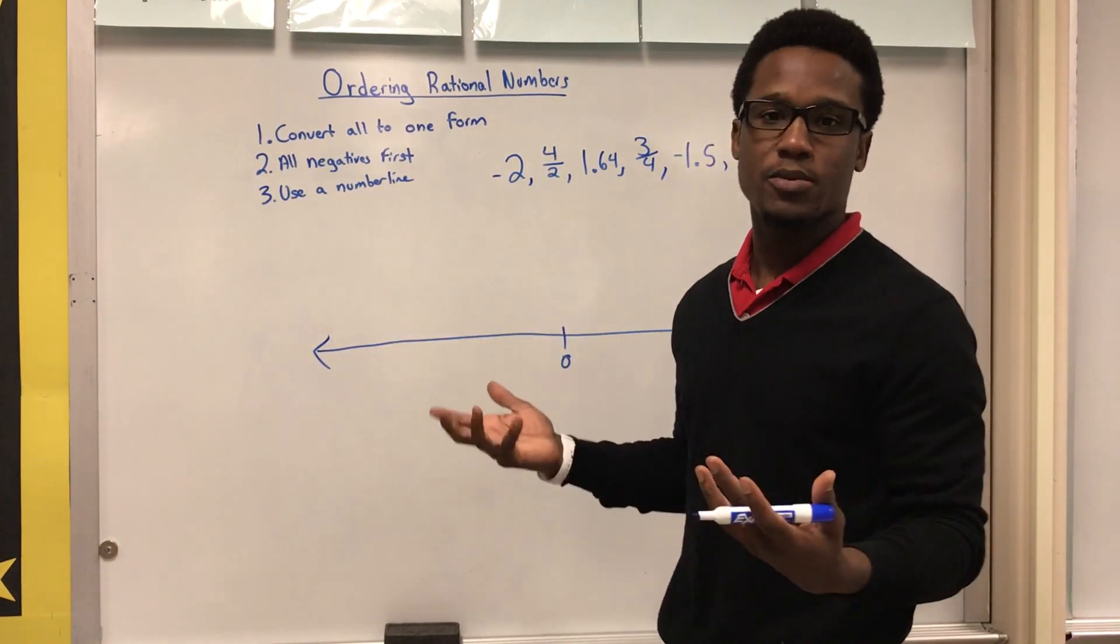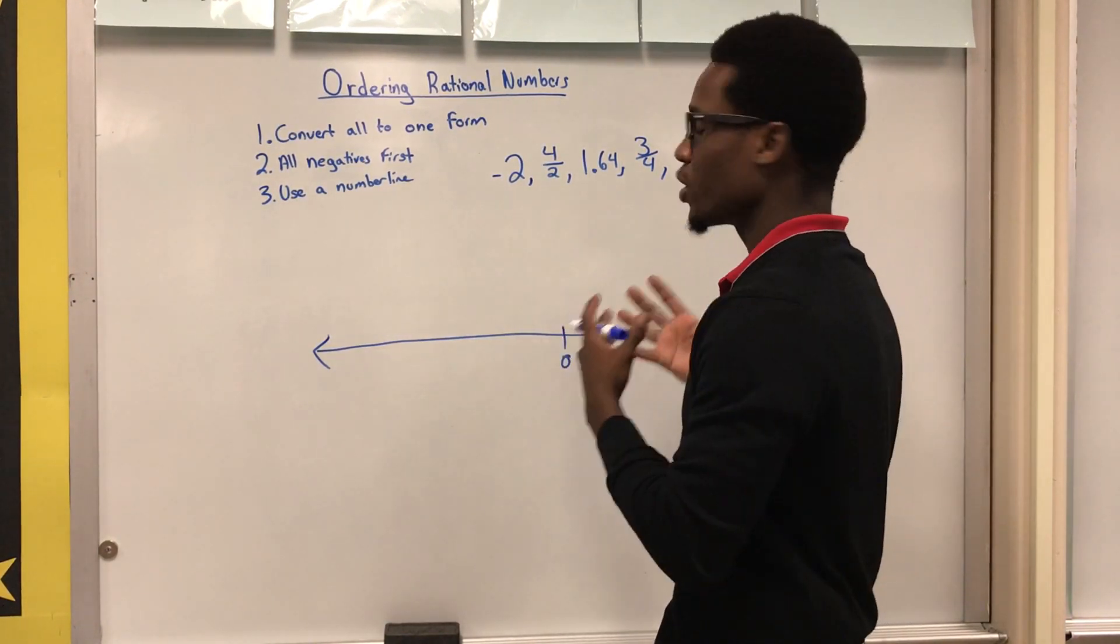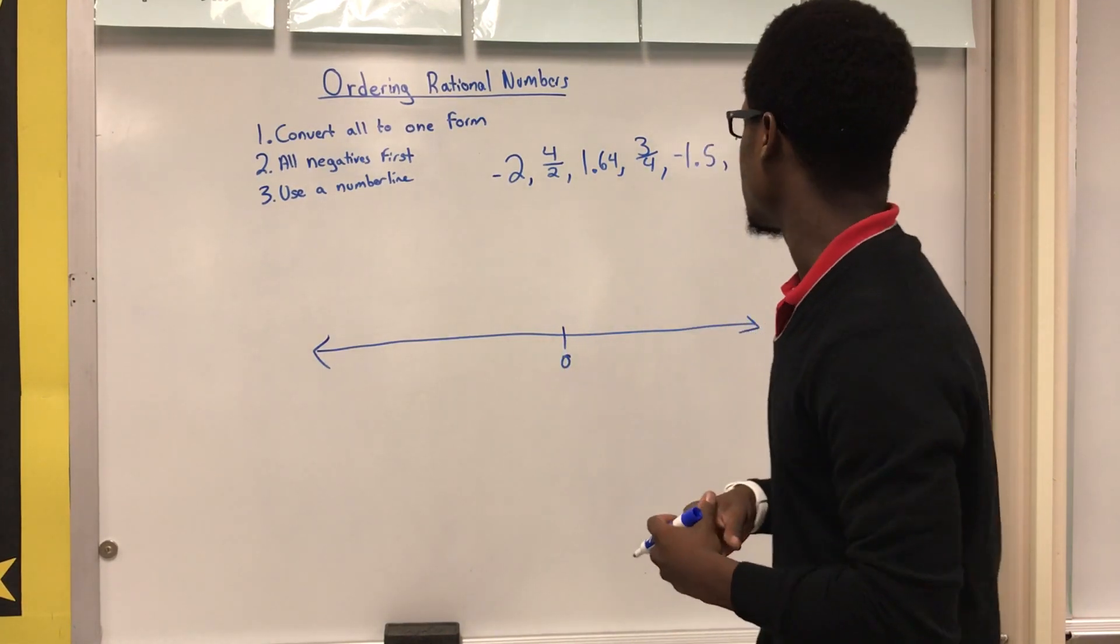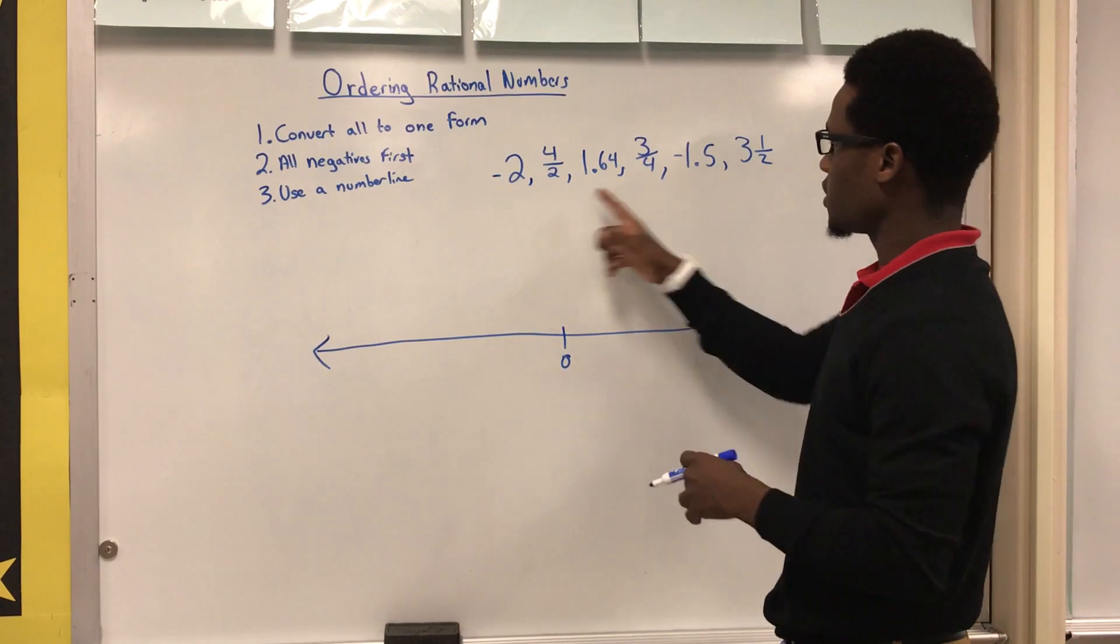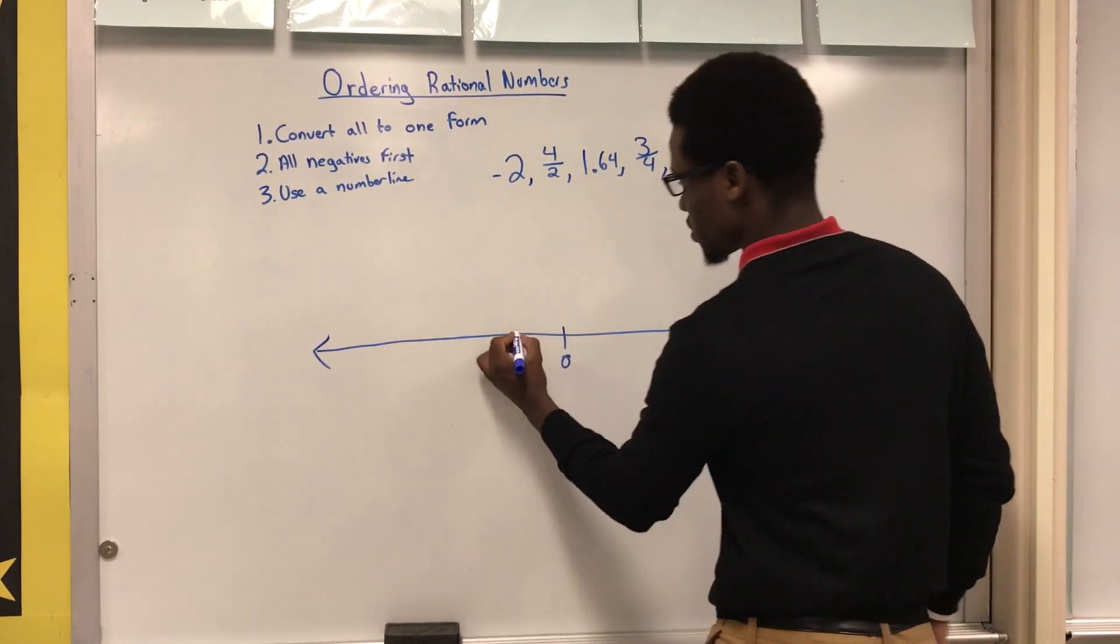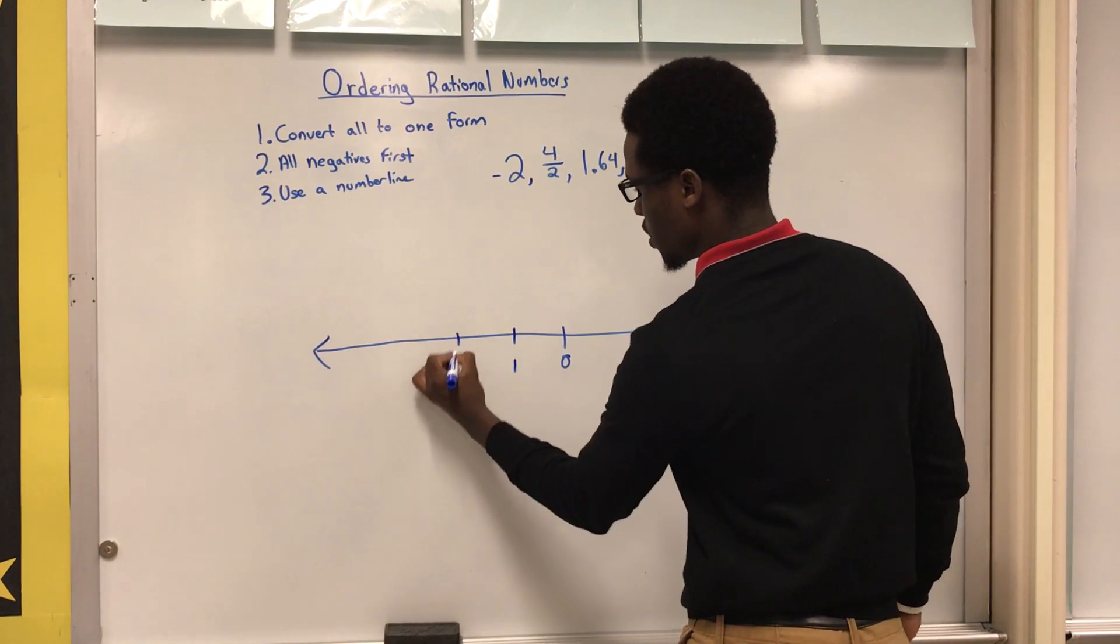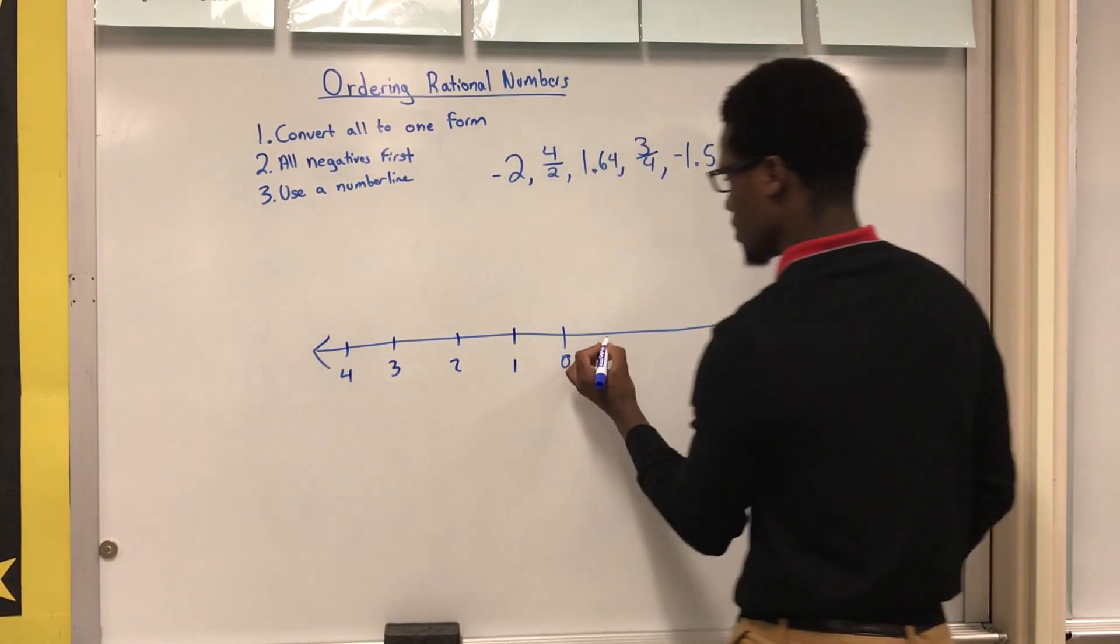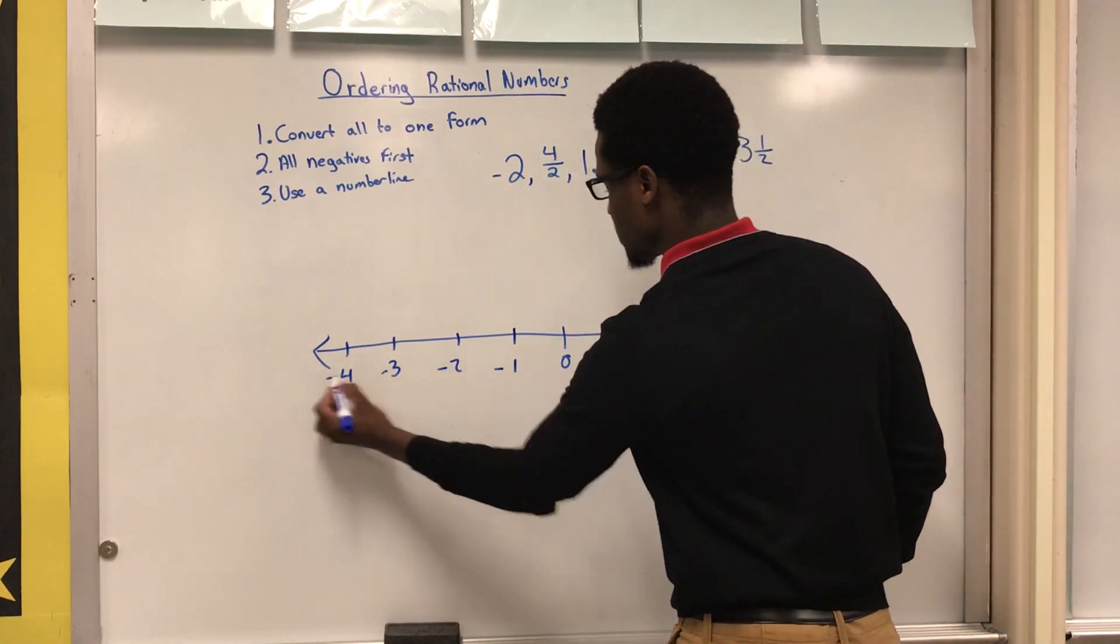We all know how to draw a number line, so let's go ahead and use them today. My numbers range from negative two to three and a half, so I'm just going to draw my number line accordingly: one, two, three, four. This is going to be all negatives on this side, and then one, two, three, four.